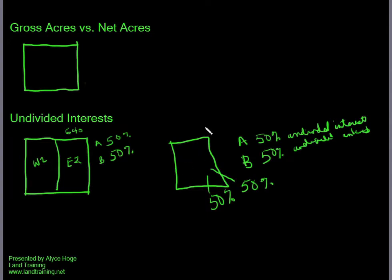Now using this information, if someone owns a 50% undivided interest, we're going to calculate their gross and net acres by that undivided interest. Sometimes this is called a mineral interest or a mineral ownership interest—what is their share, their interest in the property.